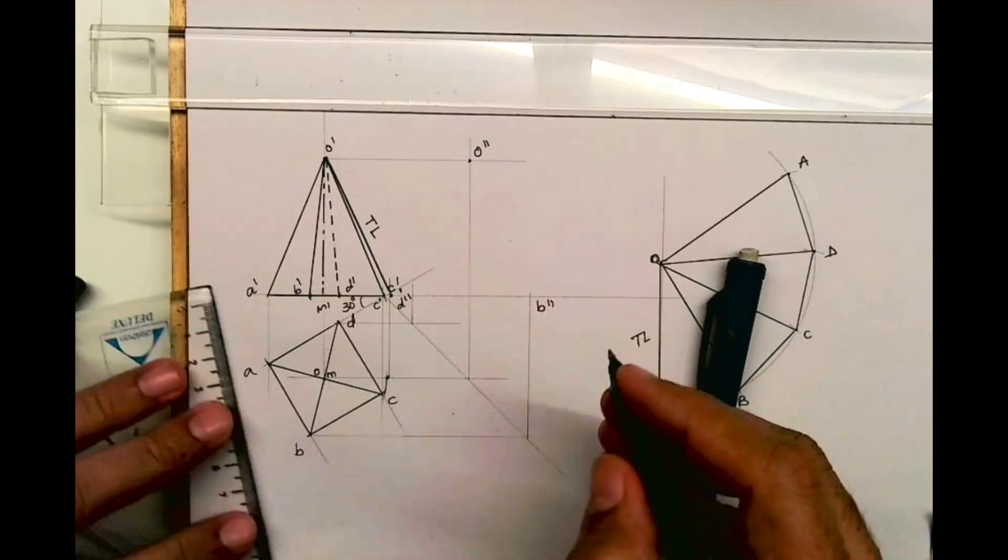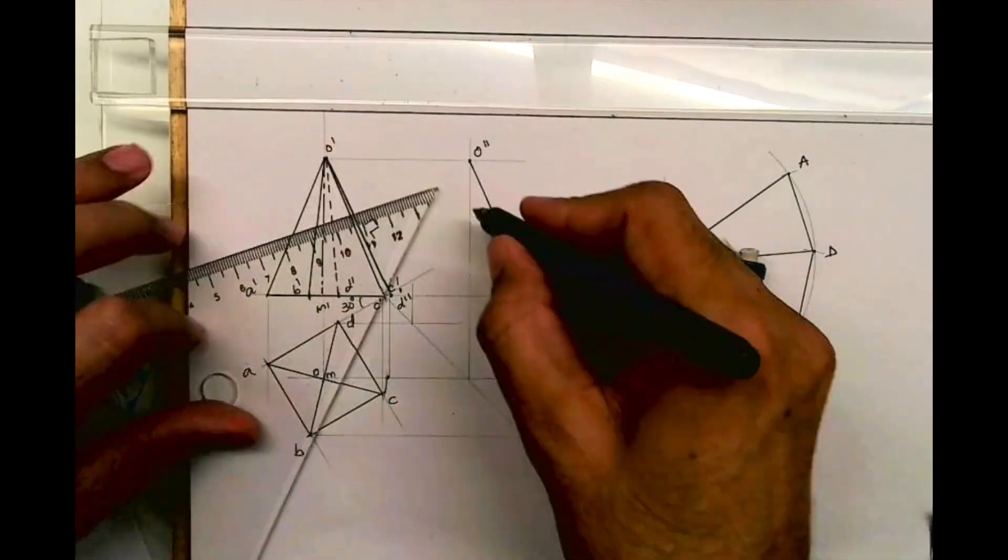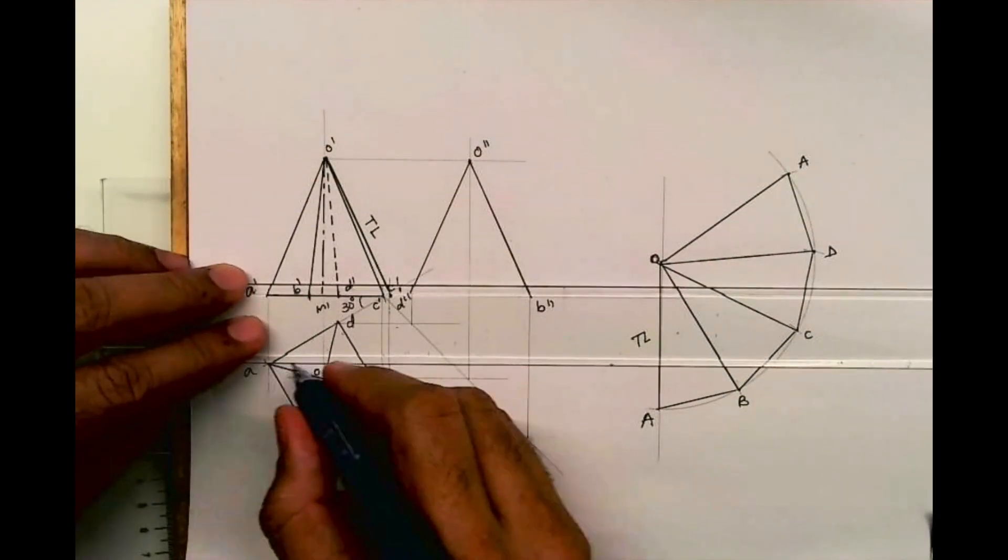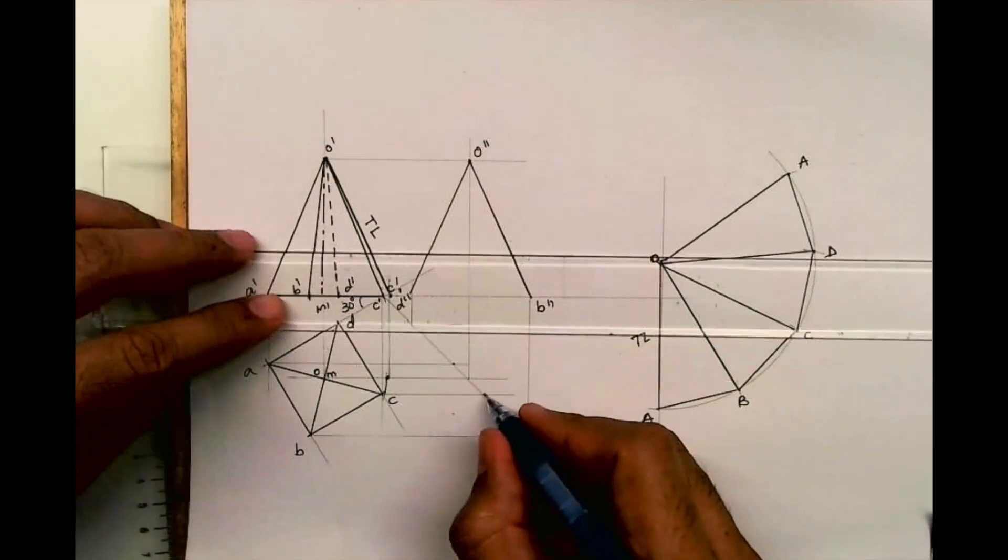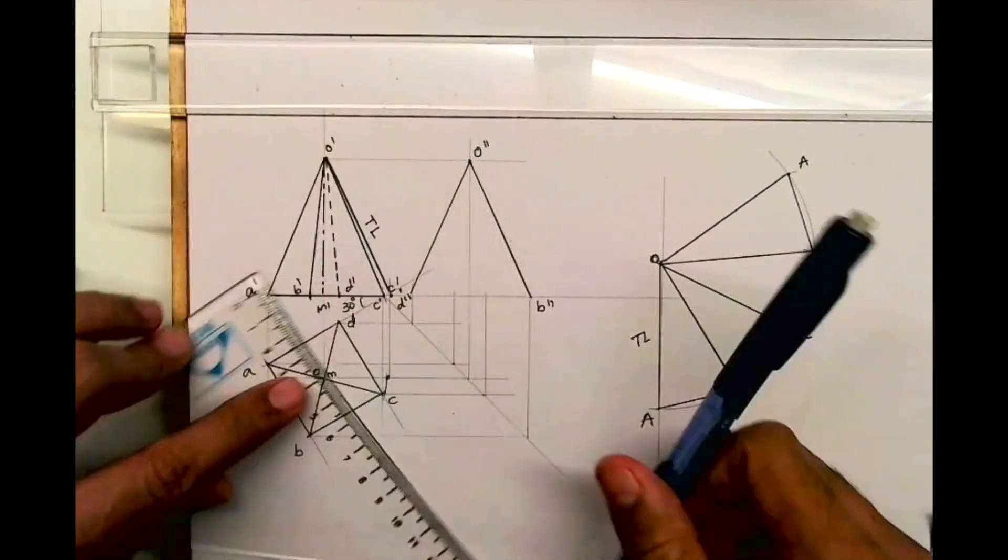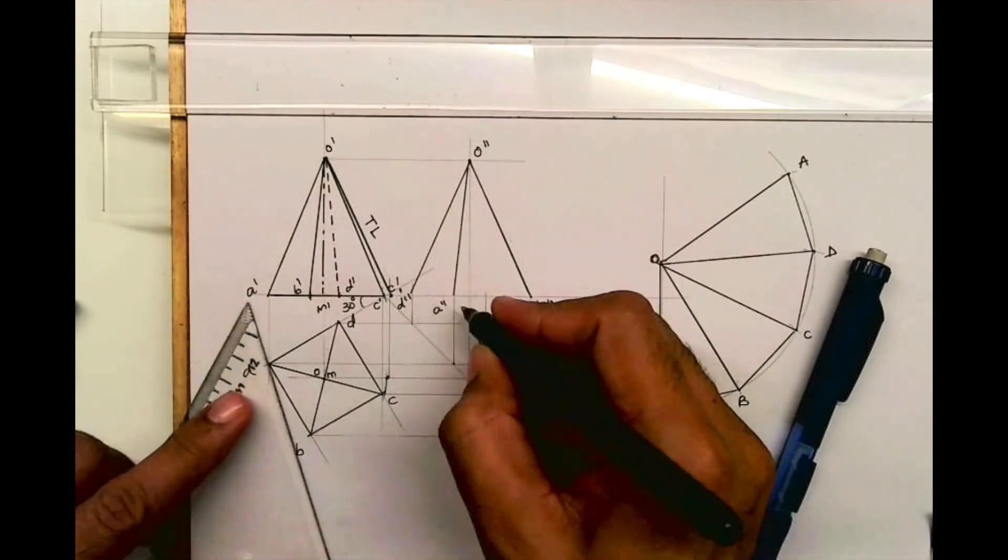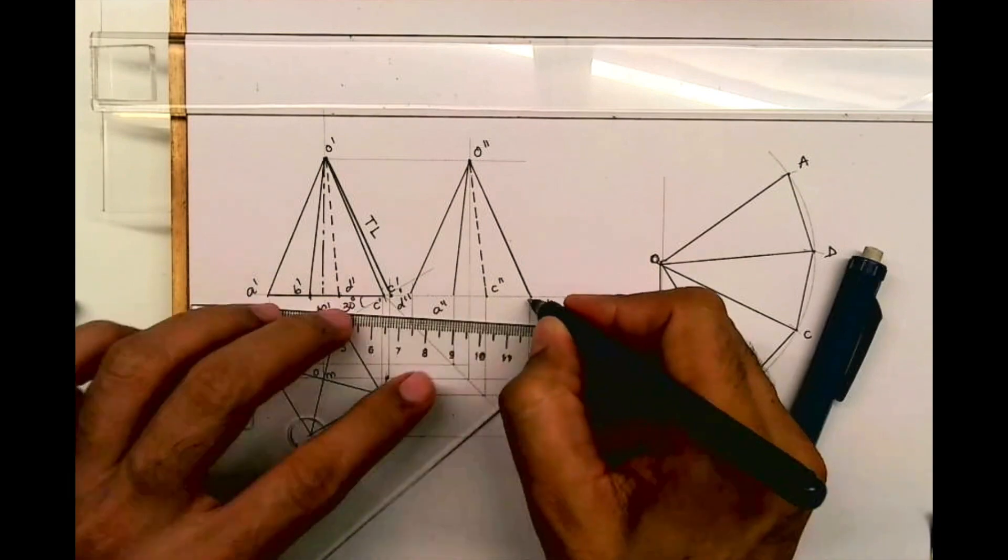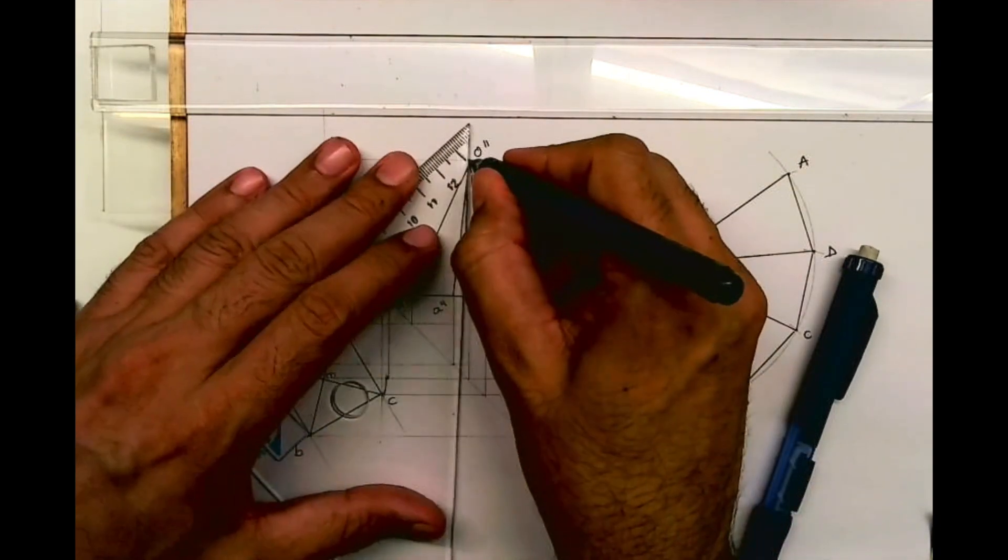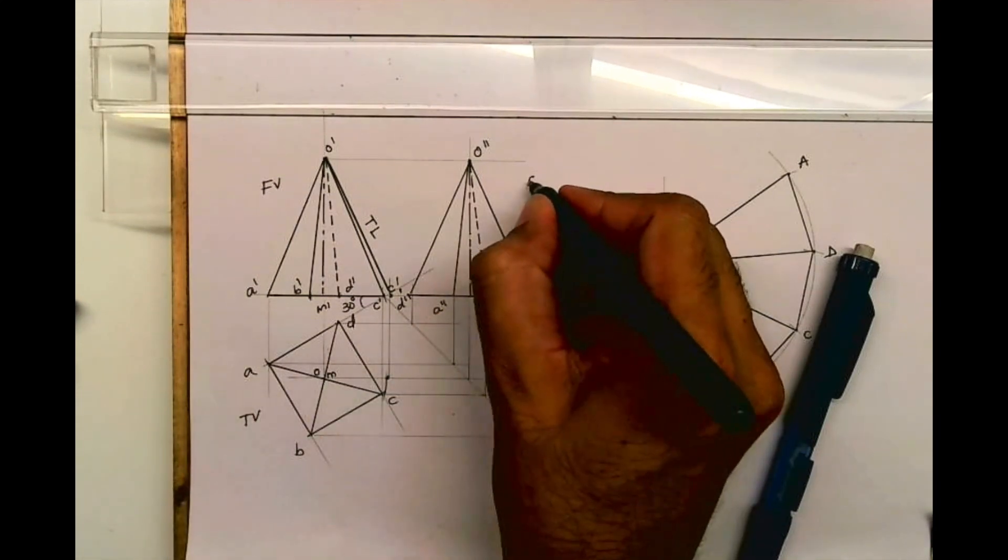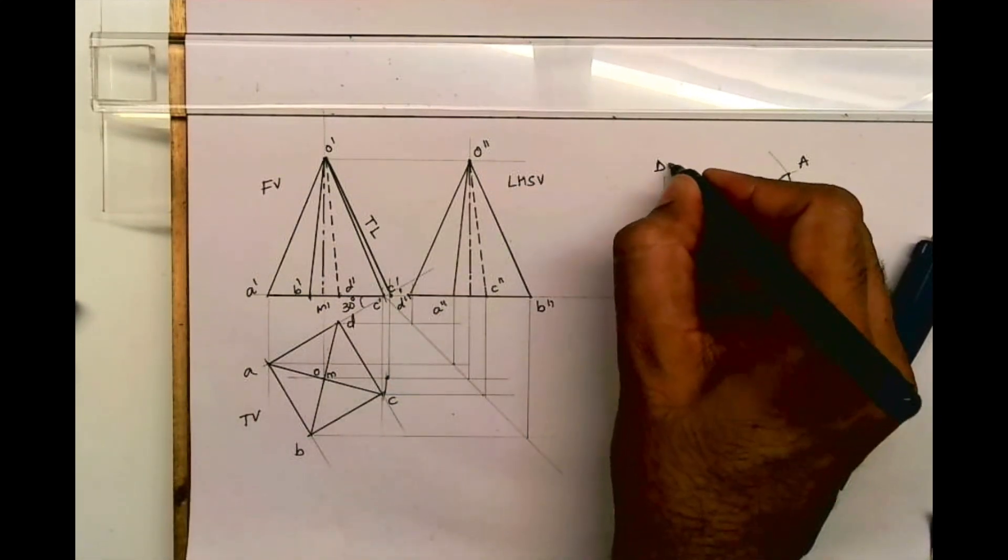This is B double dash and D double dash. So O double dash B double dash D double dash will be dark. When you see from side, A double dash will be dark and C double dash will be dotted. O double dash C double dash will be dotted because it is behind. This way we are done with front view, top view, and side view of square pyramid as well as development. Thank you.